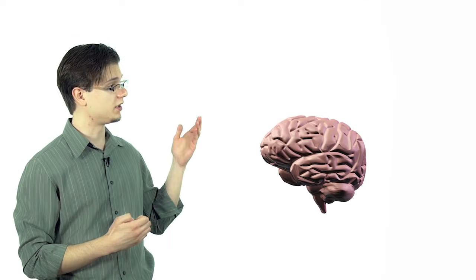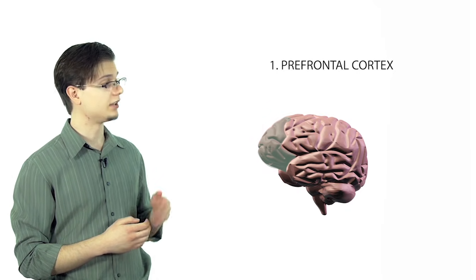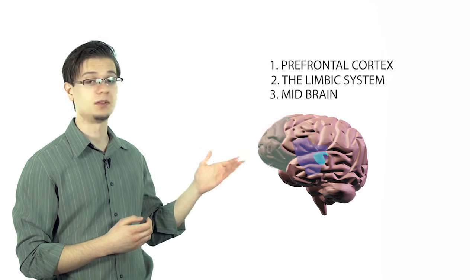There are three main areas of the brain that you often find associated with addiction: the first one being the prefrontal cortex, the limbic system, and the midbrain.